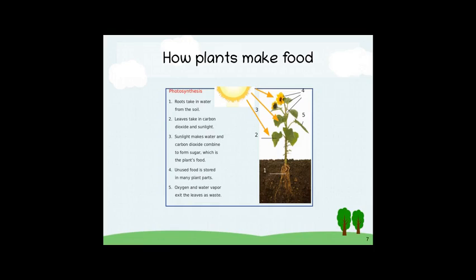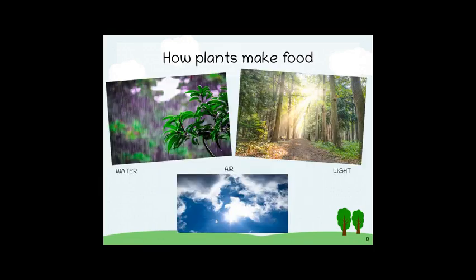So, what is photosynthesis? It's how plants make their food. And what ingredients do they need? There are three main ones: water, air, and light. With these conditions, plants can grow and make their own food.